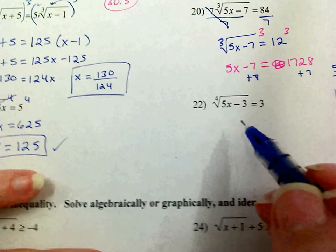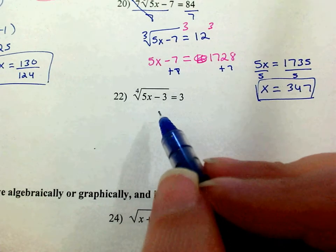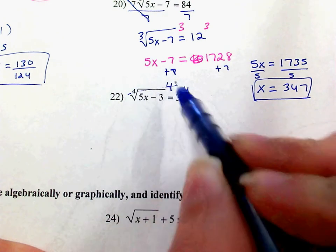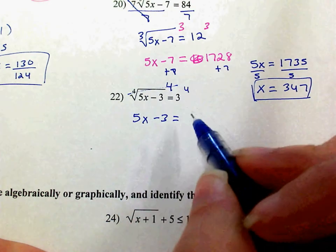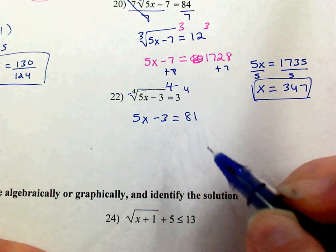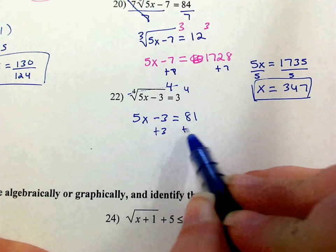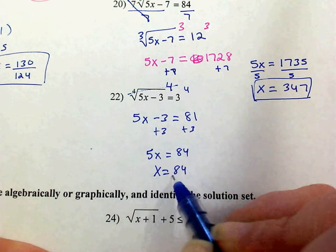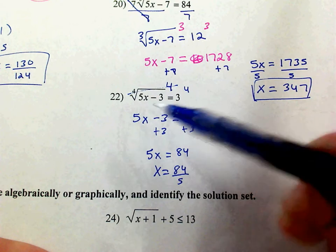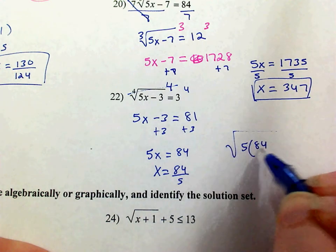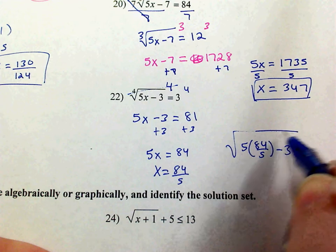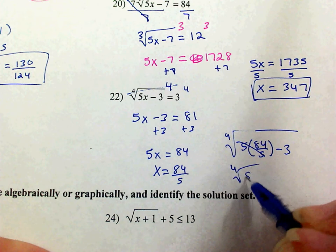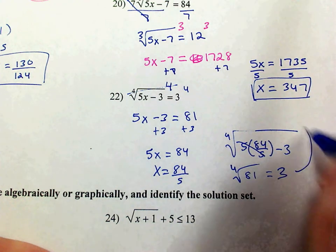Let's do problem 22. To get rid of a fourth root, I raise it to the fourth power — those cancel out. 5x minus 3 equals 3 to the fourth, which is 81. I'm going to add 3 and get 84, then divide by 5. So x equals 84 fifths. If I plug in 84 fifths, that gives 84 minus 3 equals 81, and the fourth root of 81 is 3 — which is what it says it equals. So we're good.